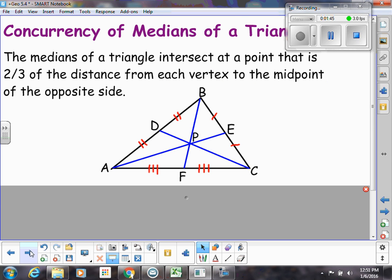So other things we know about the centroid. The medians of a triangle intersect at a point that is two-thirds of the distance from each vertex to the midpoint of the opposite side. So this centroid P is two-thirds that whole distance from B to F. So if I start at B and go to F, that distance, this is two-thirds of that whole length.